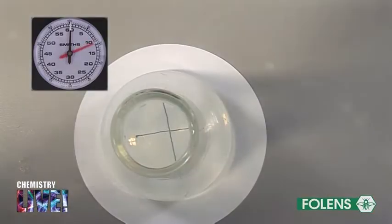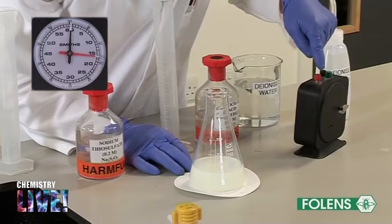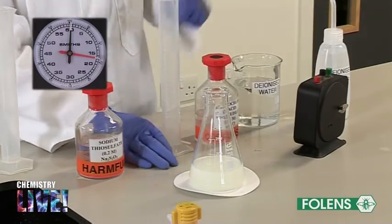Look at the cross through the solution and when the yellow precipitate of sulfur reaches such a stage that the cross is no longer visible, stop the stop clock.